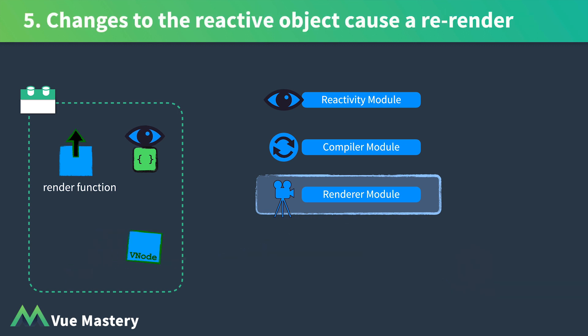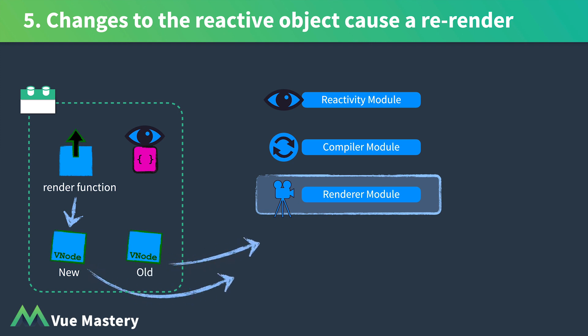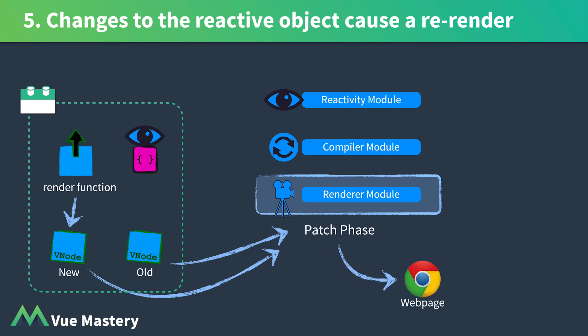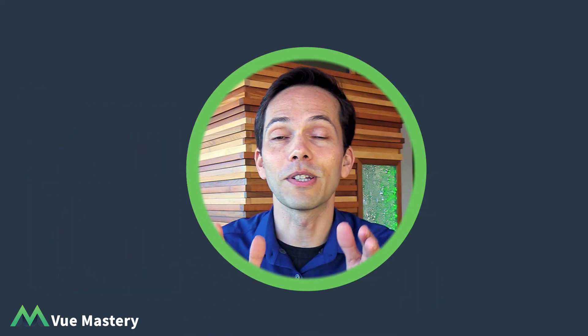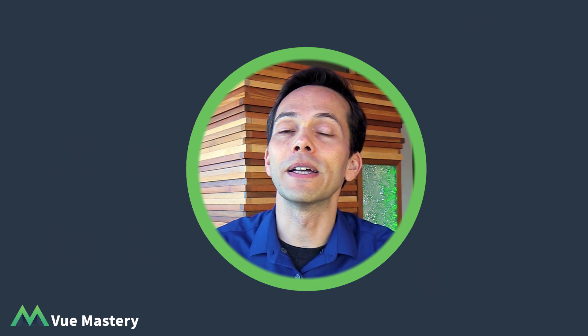Lastly, if any changes happen to our reactive object which is being watched, the renderer invokes the render function again, creating a new virtual DOM node. Then both the new and the old virtual DOM node get sent into the patch function, which makes updates to our web page as needed. Okay, with this information it should be a lot easier to get through everything that Evan's going to teach you in the next few lessons. Hope you enjoy it.